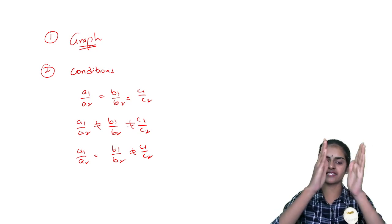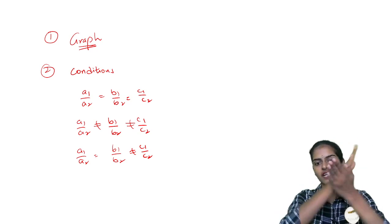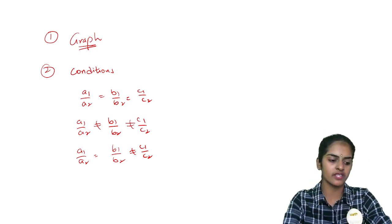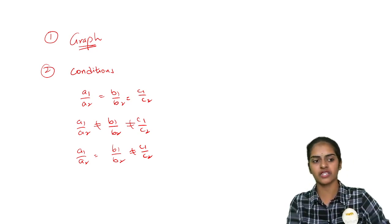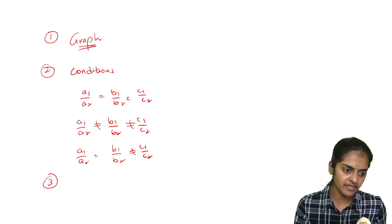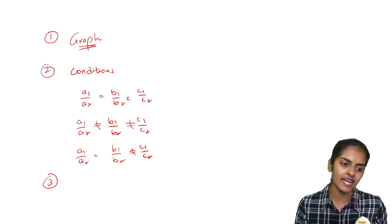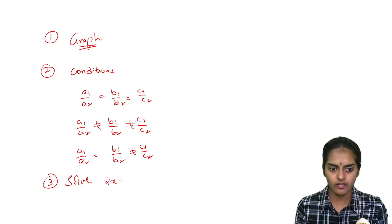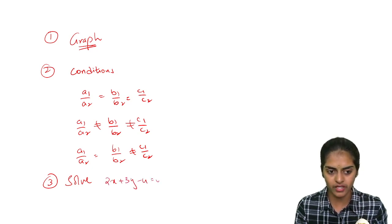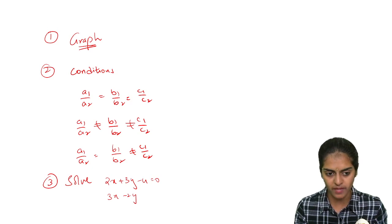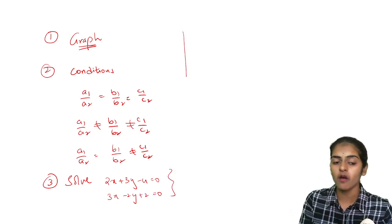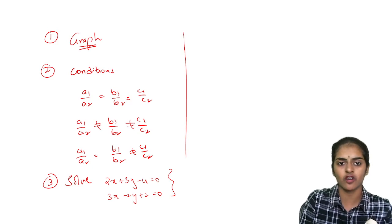If all three are equal, coincident. If nothing is equal, intersecting. If only two are equal, then parallel. This is a very important concept which you will get for short answer, graph you will get for essay. This is for short answer, and also they are asking you to solve linear equations. They will give you: solve 2x plus 3y minus 4 equal to 0, 3x minus 2y plus 2 equal to 0. They are giving one more model for longer questions.